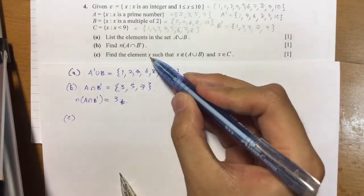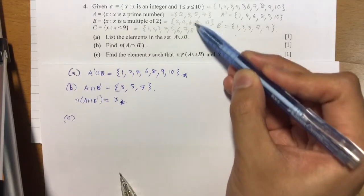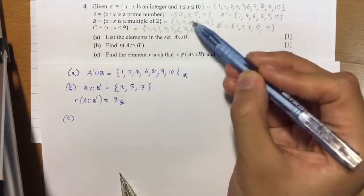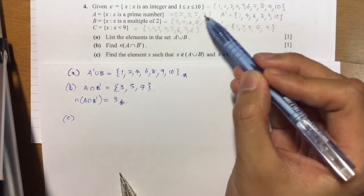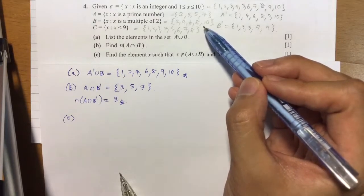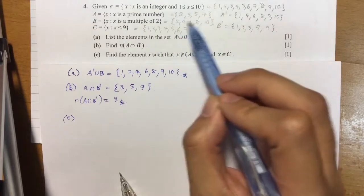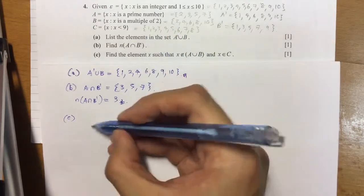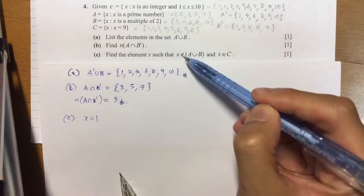Last but not least, find an element x such that x does not belong inside A union B, meaning anything that's not inside A and B, and it belongs inside C. So if you take a look at everything inside here, I don't want any number here, but I want something that belongs to C. So let's take a look at all these numbers here: 2, 3, 4, 5, 6, 7, 8, 10. And I take a look at this set: 1, 2, 3, 4, 5, 6, 7, 8. What element belongs inside here but not inside here? That's what the question is asking. So a quick scan, you realize the number is just the number 1. Double check. 1 belongs inside C, and it does not belong inside here. So I take a look, oh yes, there is no 1. So therefore, the element is 1.